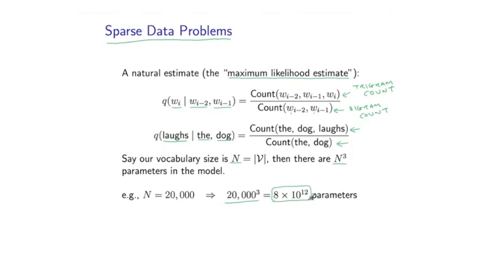Now because of this, inevitably, many of the counts used in these estimates will be equal to 0. And that will lead to all kinds of problems. In many cases, these q parameters will be equal to 0. That happens if this count on the numerator, the trigram count, is equal to 0. Whereas still, if the bigram count is equal to 0, this count on the denominator, this estimate is completely undefined.